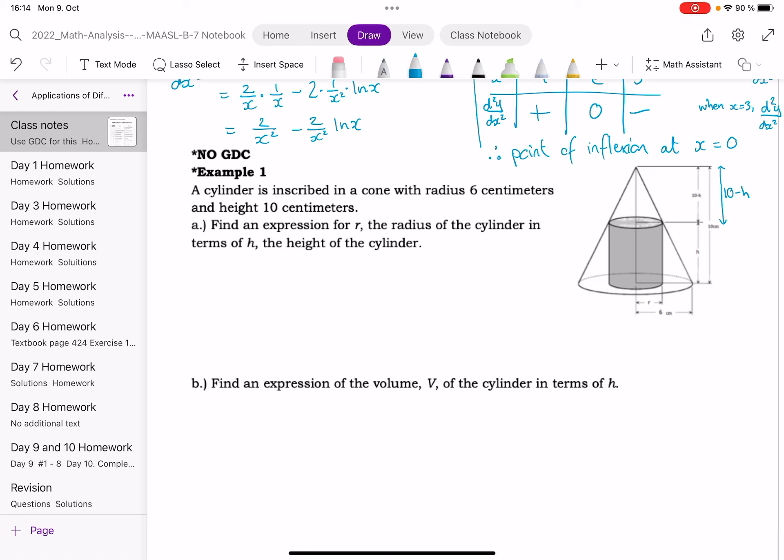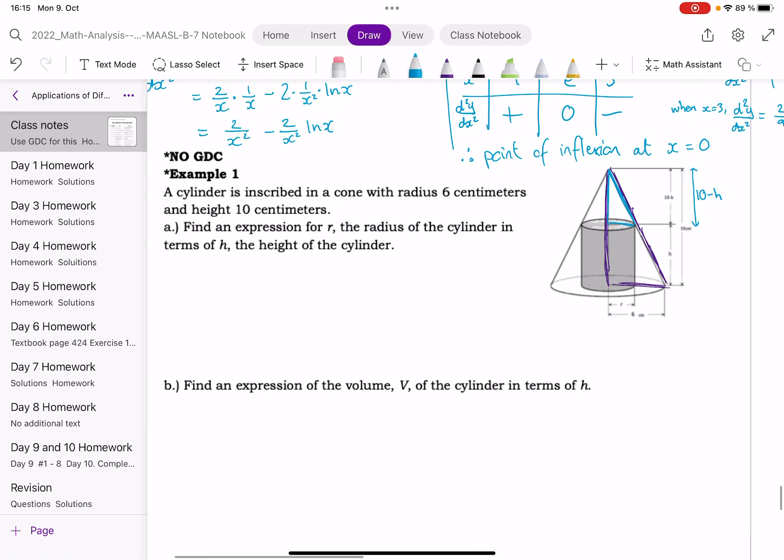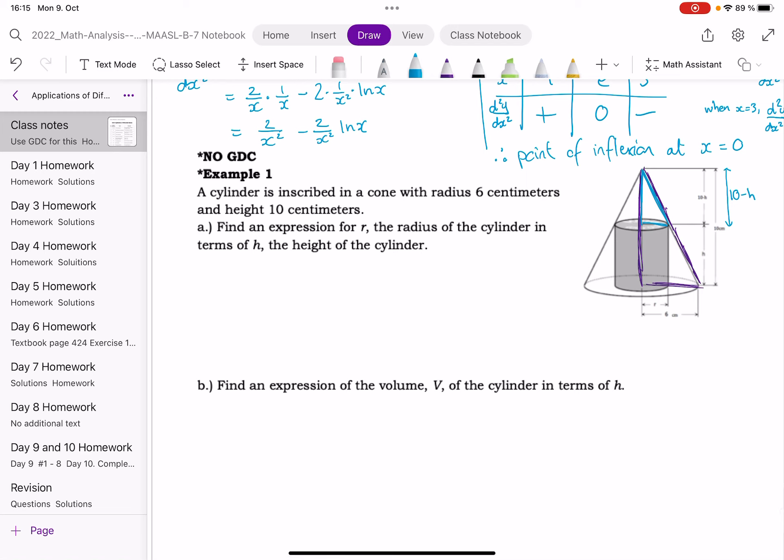This question uses the idea of similar triangles, which should always be in the back of your head with these optimization questions if you can see a triangle involved. In particular, these kind of cone-based ones. Often it will be like maybe a cone is being used as a water container and it's partway full or something like that. So we're trying to find an expression for R, the radius of the cylinder, in terms of H, the height of the cylinder. So what we need to use, as I said, was similar triangles, which means that the triangles are the same shape. One's just bigger than the other one. So they'll have the same proportions.